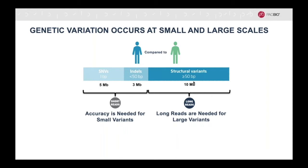Even though single nucleotide variants are by far the most common variation, due to their size, they still only make up about 5 megabases of the human genome. 3 megabases of the human genome is made up from indels, and for the larger size of structural variants, they make up 10 megabases of the genome.